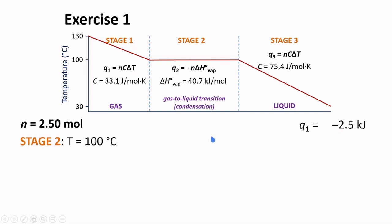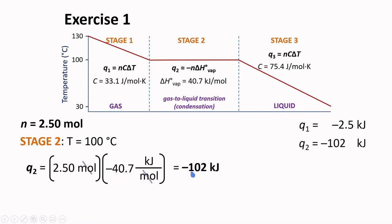For stage 2, this occurs at a temperature of 100 degrees Celsius. Here, the values are just plugged in to the formula. The heat of vaporization is given a negative value. This is equivalent to the molar heat of condensation at 100 degrees Celsius. Moles are cancelled. And we will get negative 102 kJ.